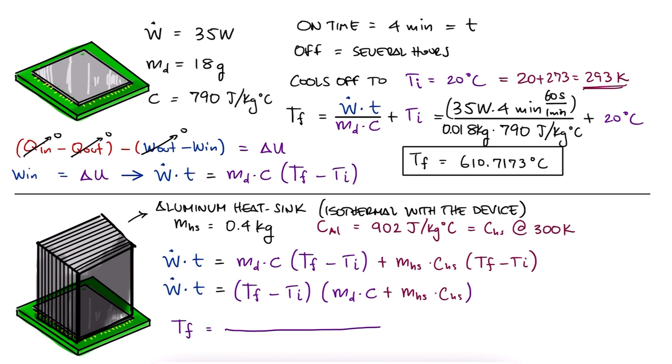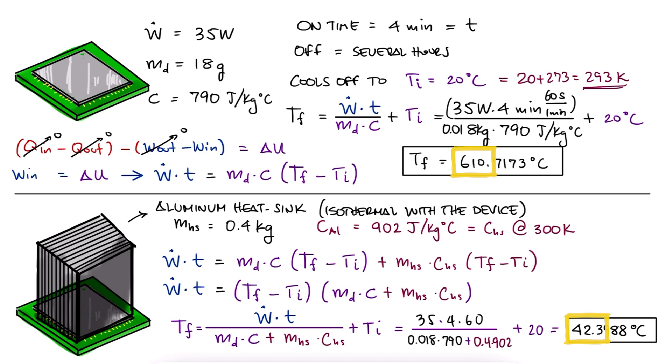Solve for the final temperature, substitute the values, and find a final temperature of 42.4 degrees Celsius. This shows the importance of having a heatsink for devices that use a lot of power. We went from the device reaching 611 to only 42 degrees Celsius.